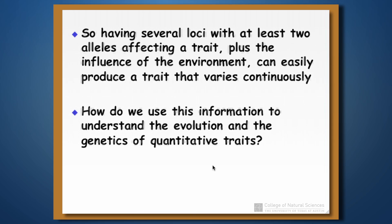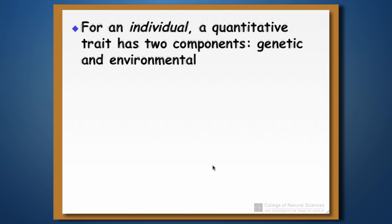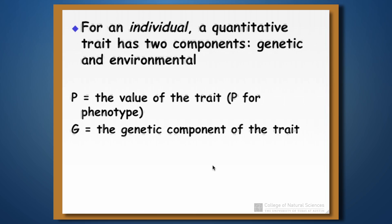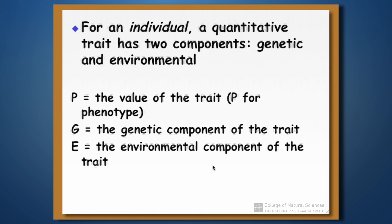How are we going to use this information to understand the evolution and genetics of a quantitative trait? Let's start at the individual level. For an individual, a quantitative trait has two components: the genetic component and the environmental component. We write this as P equals G plus E, where P is the phenotype, G is the genetic component contributing to the trait's value, and E is the environmental component.